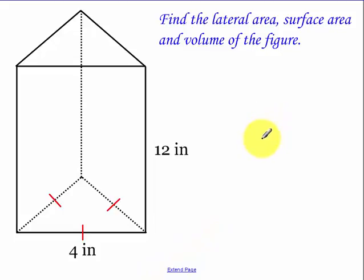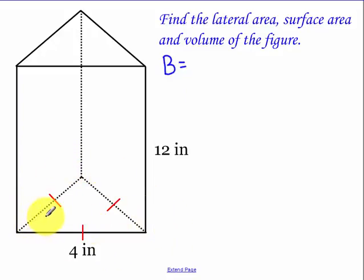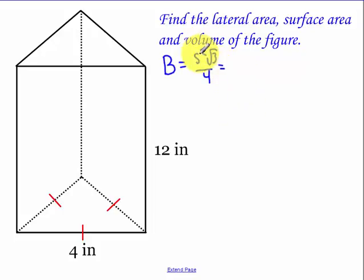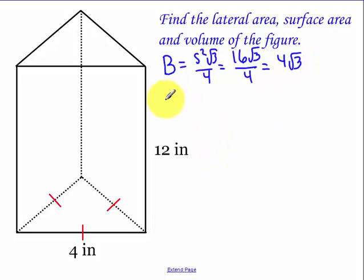Find the lateral area, surface area, and volume of a triangular prism. First I'll find the area of the base — I'll use capital B to represent the area of the base. This is a triangular prism, and most of our prisms are going to be equilateral triangles. The area of an equilateral triangle is s² times root 3 over 4. So for side length 4: 4 squared times root 3 over 4 simplifies to 4 root 3. That's the area of the base.